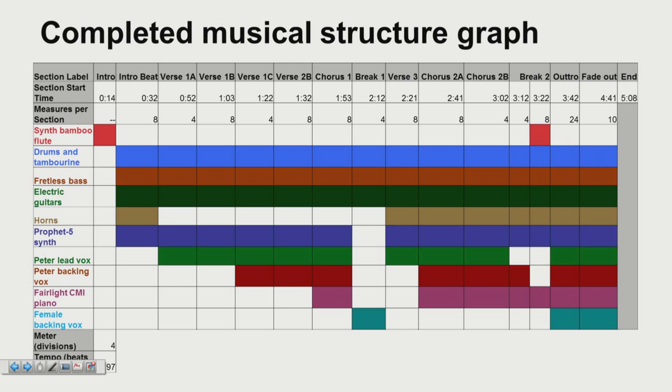Furthermore, you can tell that the back half of the song is a little bit denser and more intense. There are these horns under the background that weren't there in the first half of the song. There is this Fairlight piano, this digital piano, there are backing vocals at the end that aren't there at the beginning. So you should be able to get a sense of the contour of the song just by kind of glancing at your completed structure graph.